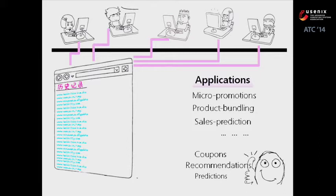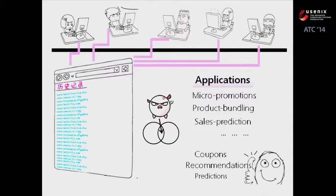The third application is called a sale prediction application. For example, assume Angry Birds is very popular in the video game directory. The company wants to know if they launch a new product like Angry Pig, whether it will be successful. They first ask the micro-promotion application whether Angry Birds is in the top-k list, then connect to the product bundling application to see whether Angry Birds' bundled products are also popular. If both are true, the company can predict that a similar new product like Angry Pig may also gain success.